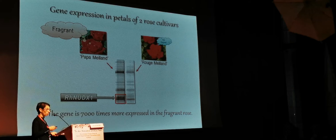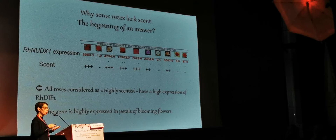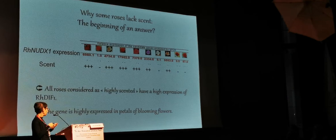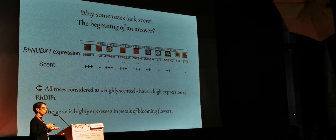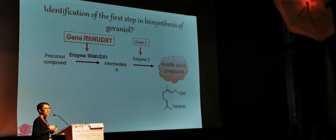We did different experiments and found that all cultivars considered highly scented had a very high expression of this gene, and this gene was really highly expressed in petals of fragrant flowers. We made experiments to prove that this gene had a very important function in the production of scent compounds. Basically, we found the first step leading to the compound geraniol. We still don't have the second enzyme — we have a little more work to do.